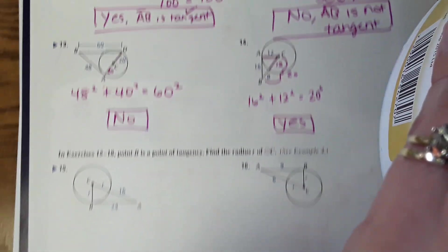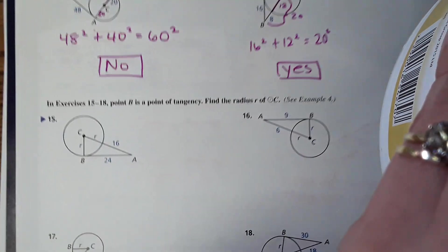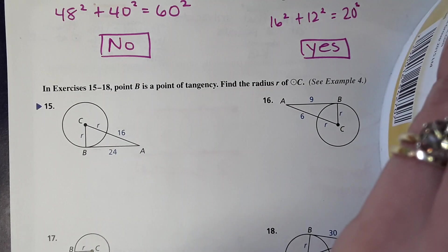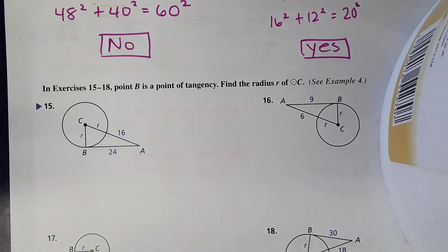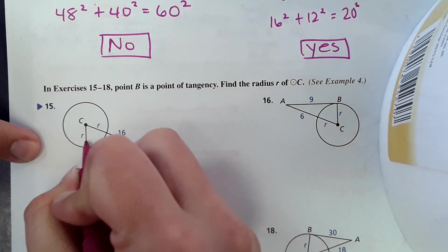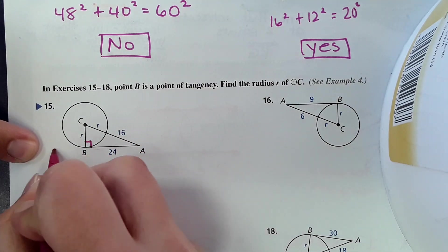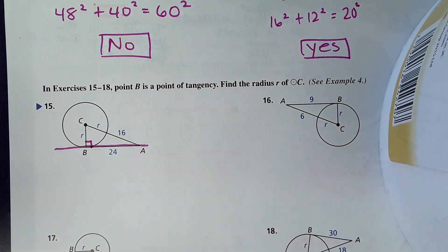Moving on. We're just going to do one example from the next category. Point B is a point of tangency by the radius of circle C. So same idea. If this is tangent right here, then we have a 90 degree angle and we can use Pythagorean theorem.